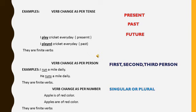And the third heading is verb change as per number, either it is singular or plural. Apple is of red color. And second one, apples are of red color. As we change, the subject is singular, so we use is. When the subject is plural, so we use are. So they are finite verbs. So they change as per tense, as per person, and as per number. But they all are finite verbs.